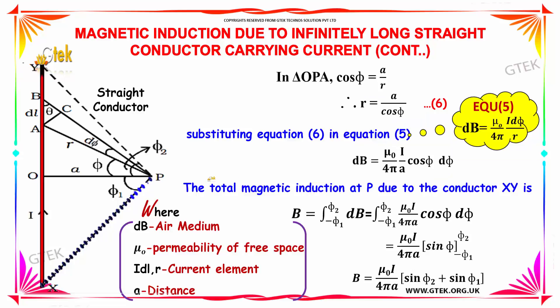The total magnetic induction at P due to the conductor XY is the integral from minus psi1 to psi2 of dB. You got mu0 into I by 4pi a, integral of cos psi into dpsi from minus psi1 to psi2.